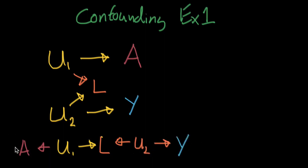And we traverse the path. This is totally fine. Totally fine. Totally fine. Then boom, we hit a collider. Two arrows point towards the same value. So L in this case is the collider.